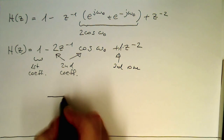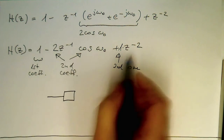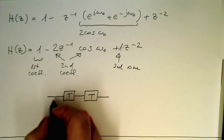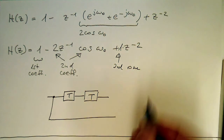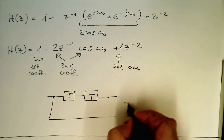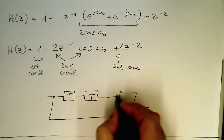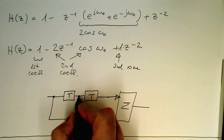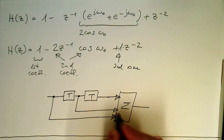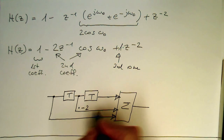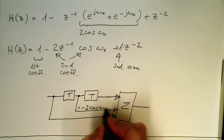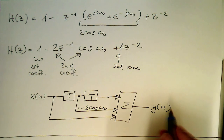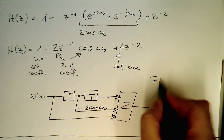With those coefficients we can directly draw a circuit diagram. We need two delay steps. The undelayed part goes straight to the output with weight 1, the one-step delayed part goes to the summation multiplied by -2*cos(ω₀), and the two-step delayed part also goes to the summation with weight 1. So x(n) goes in and y(n) comes out — that is our classical FIR filter.